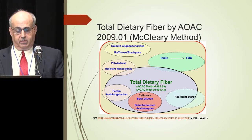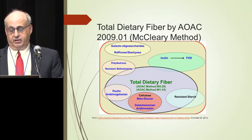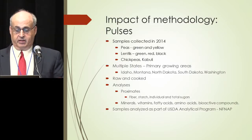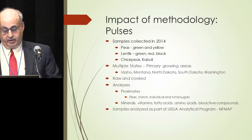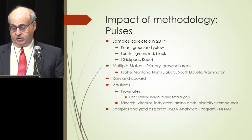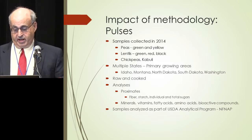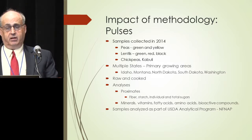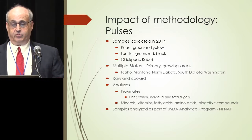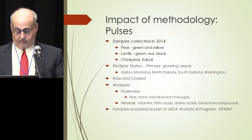As part of our ongoing work in the Nutrient Data Laboratory to keep our food composition databases up to date, we worked with the USA Dry Pea and Lentil Council to update the data on pulses. We collected samples in 2014 on peas, lentils, and chickpeas. They were picked up in multiple states — the primary growing areas for those particular pulses: Idaho, Montana, North Dakota, South Dakota, and Washington. They were analyzed raw and cooked. We did proximate as well as fiber, starch, and individual and total sugars, minerals, vitamins, fatty acids, amino acids, and some bioactive compounds. This was part of our larger analytical program, the National Food and Nutrient Analysis Program, funded by contributions from the National Institutes of Health, CDC, and the FDA.